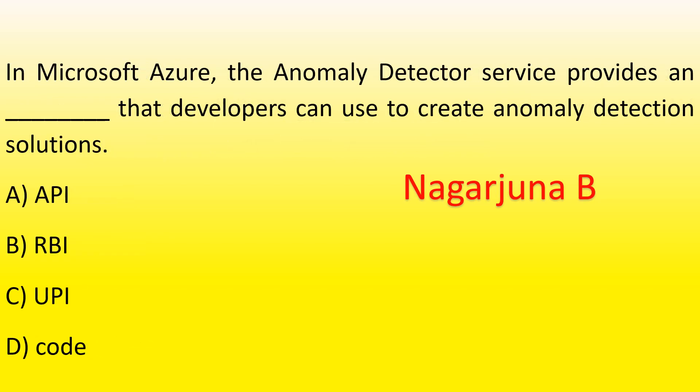Next MCQ: In Microsoft Azure, the anomaly detector service provides a dash that developers can use to create anomaly detection solutions. Options: API, RBI, UPI, code. The right answer is option A, API — application program interface.